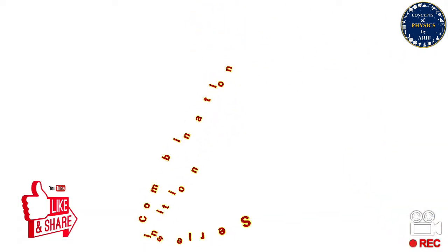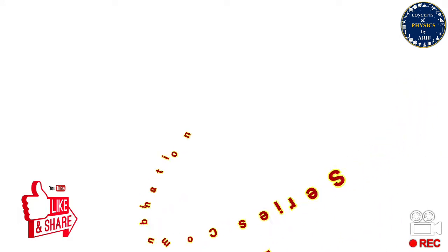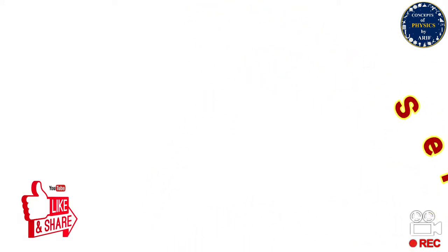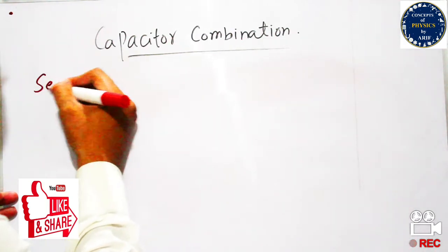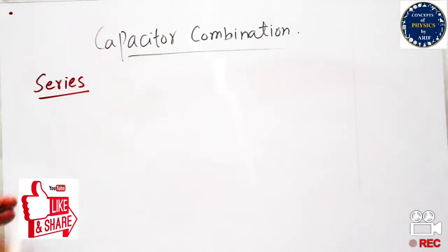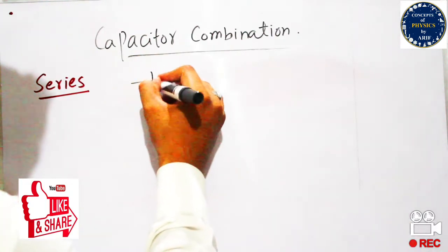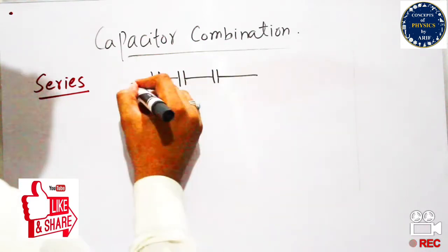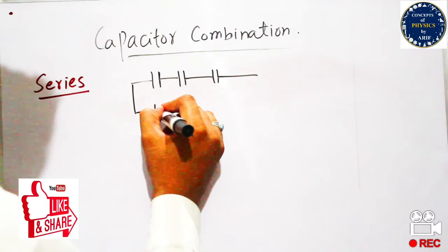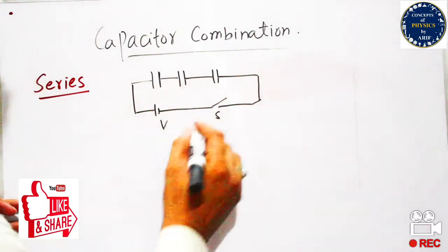Furthermore, we will discuss the series combination of capacitors in greater detail, including their formulas and diagrams. In this diagram, the capacitors are connected in series by head-to-head connections, in which one capacitor having capacitance C1 is connected to the other capacitor C2. These capacitors are connected in series with a switch and battery.